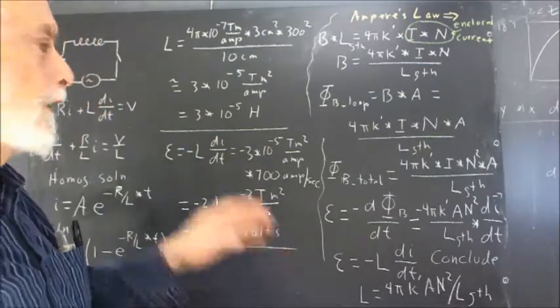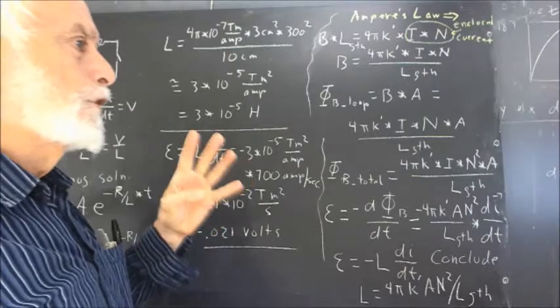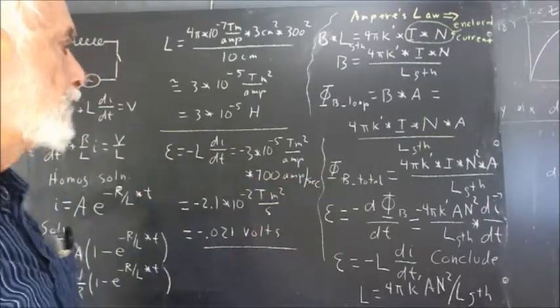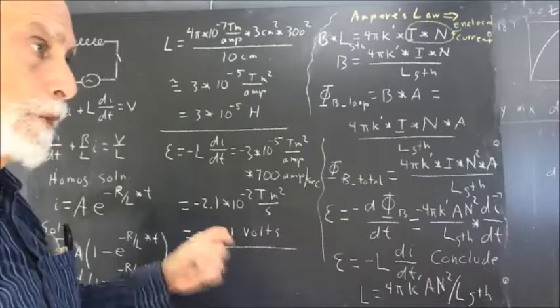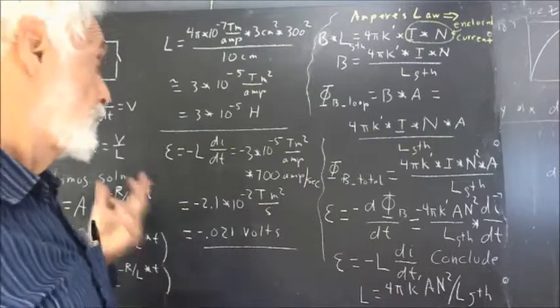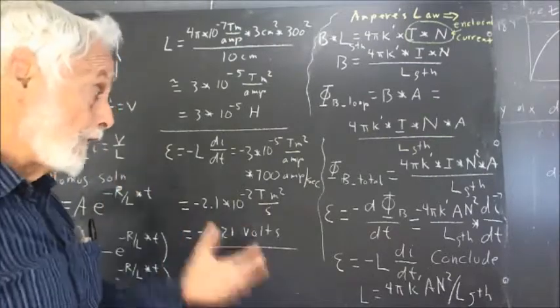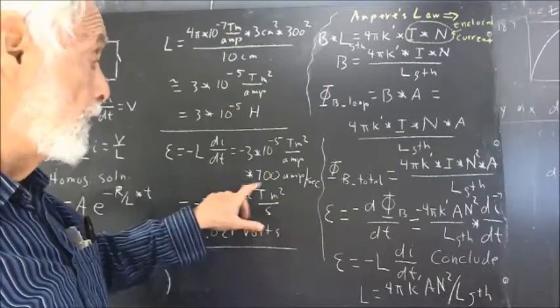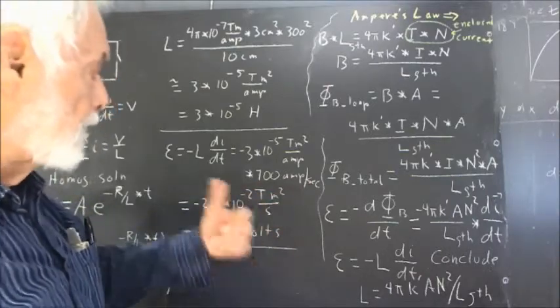So we have four changes in the magnetic flux due to that current during one single cycle. If we have 60 cycle AC current, for example, then that means we have 240 of those changes every second.